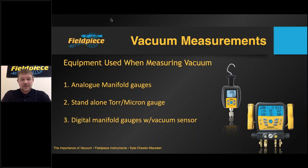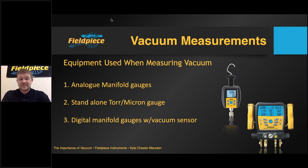The digital manifold gauge — specifically those with a dedicated vacuum sensor — has allowed the engineer to have an all-in-one device that can read both positive and negative pressure with high accuracy. It is these last two devices — the standalone Torr gauge and the digital manifold with built-in vacuum gauge — that should be used to obtain vacuum measurements on a system.